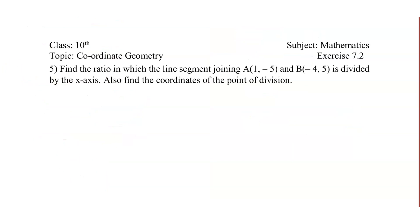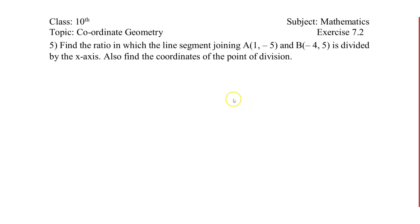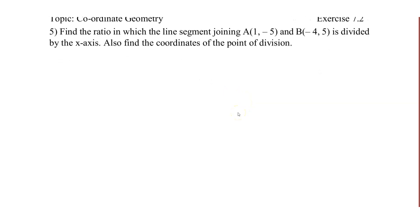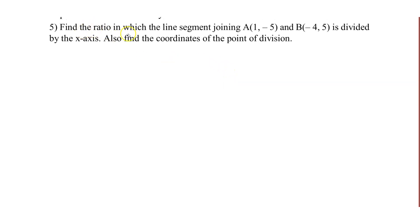This is the 5th problem. This is a similar type of problem. Find the ratio in which the line segment joining (1, -5) and (-4, 5) is divided by the x-axis. We also need to find the coordinates of the point of division.